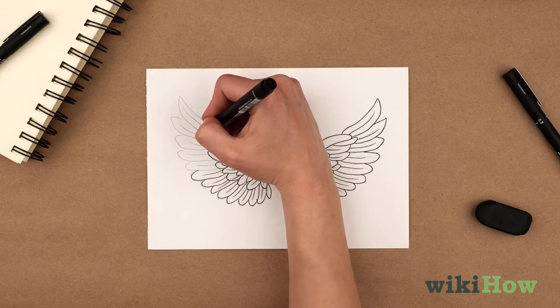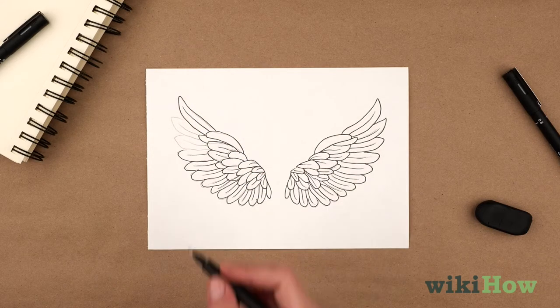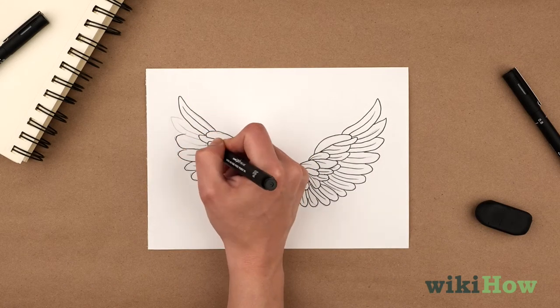To make a pair of wings, try mirroring the first wing, or experiment with drawing the wings in different poses.